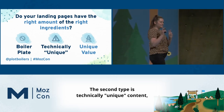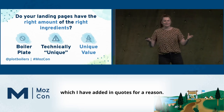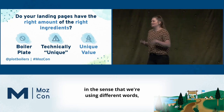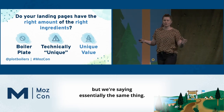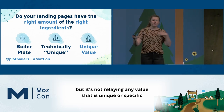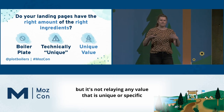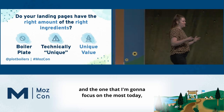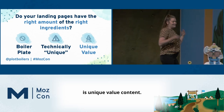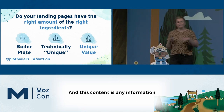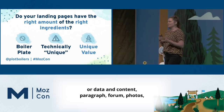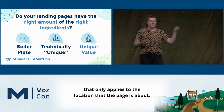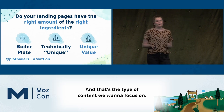The second type is technically unique content — in quotes for a reason. This type of content would pass a copied content audit in the sense that we're using different words, but we're saying essentially the same thing. The third type, and the one I'm going to focus on most today, is unique value content. This is any information, data, paragraphs, photos — anything that only applies to the specific location the page is about. That's the type of content we want to focus on.